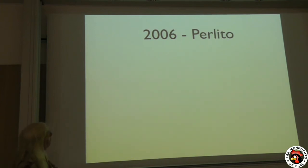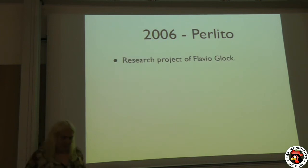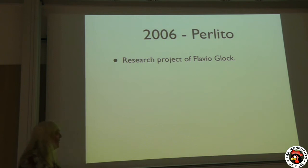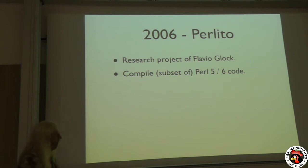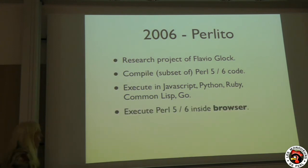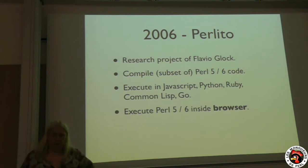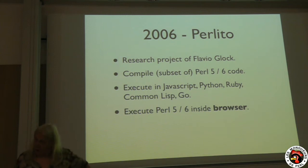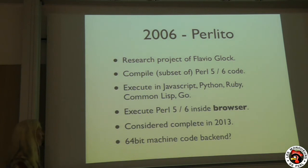Pugs was an implementation by Audrey Tang of Perl 6 in Haskell. It actually was the first real implementation of Perl 6, and it provided many pointers for later for Rakudo. But the problem was that not many developers were versatile enough in Haskell to be able to contribute. So this was actually stalled in 2006 already. The nice side effect of Pugs was that it created a large test suite that is still being used to this day.